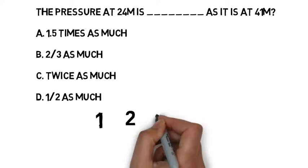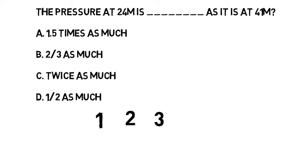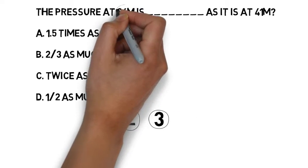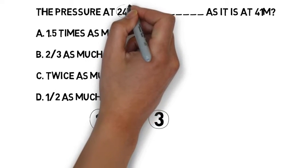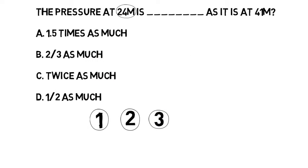And in step one, we look at the question to see what depth we are at. The pressure at 24 meters. What is the pressure at 24 meters? It is 3.4 atmospheres. So let's fill that in.